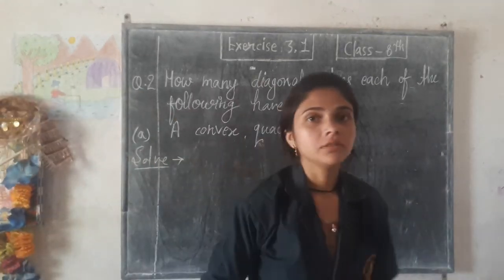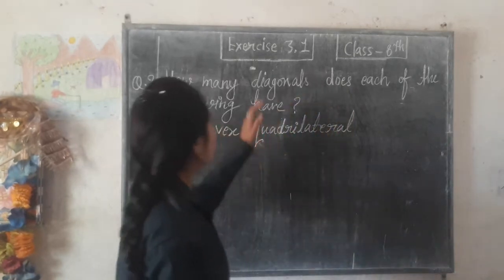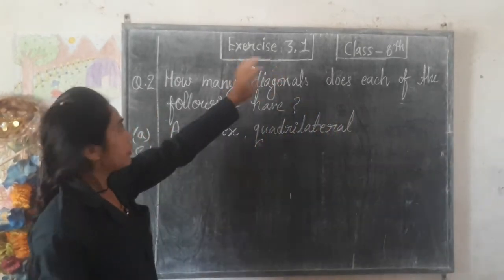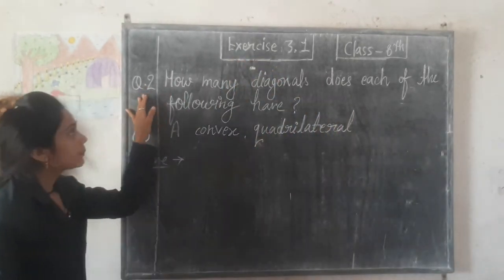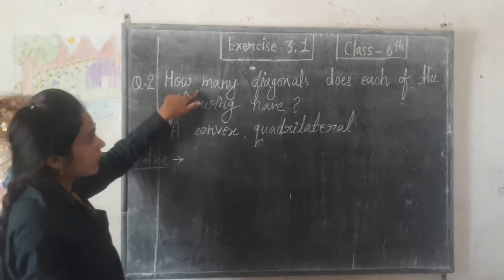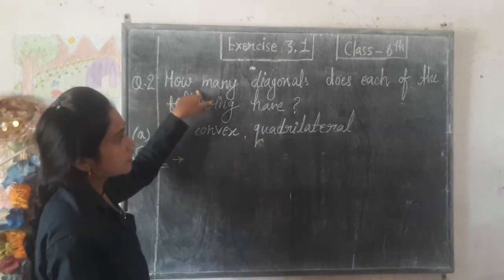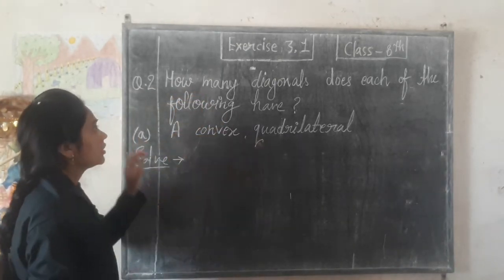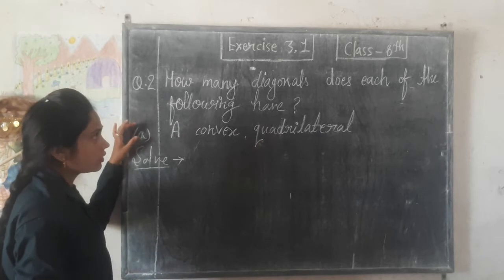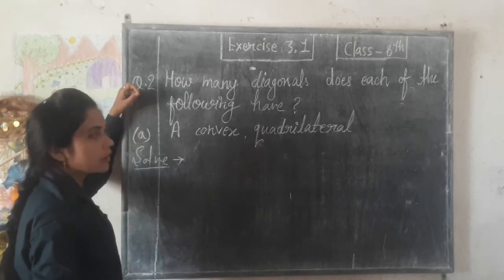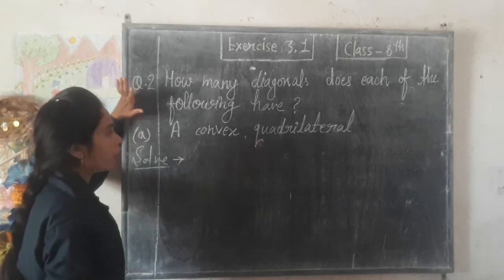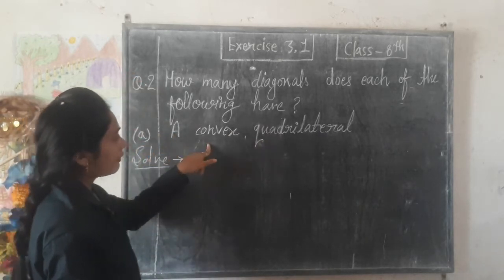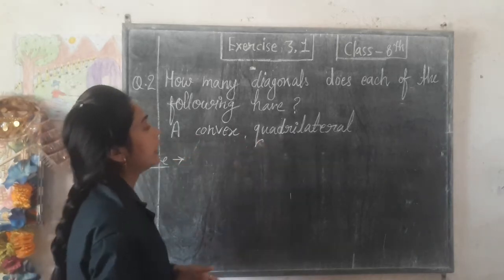Hello friends. This is exercise 2.1, question number 2. How many diagonals does each of the following have? Question number 8: a convex quadrilateral.